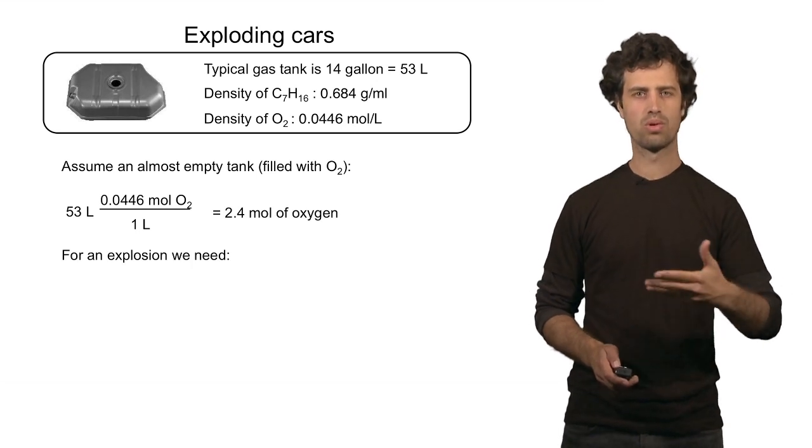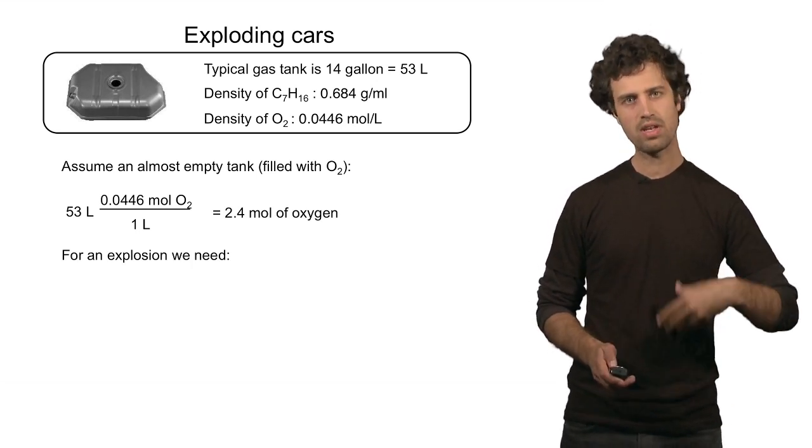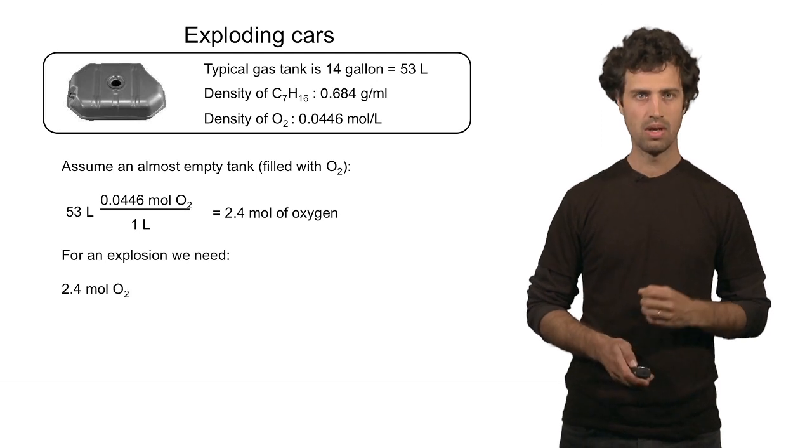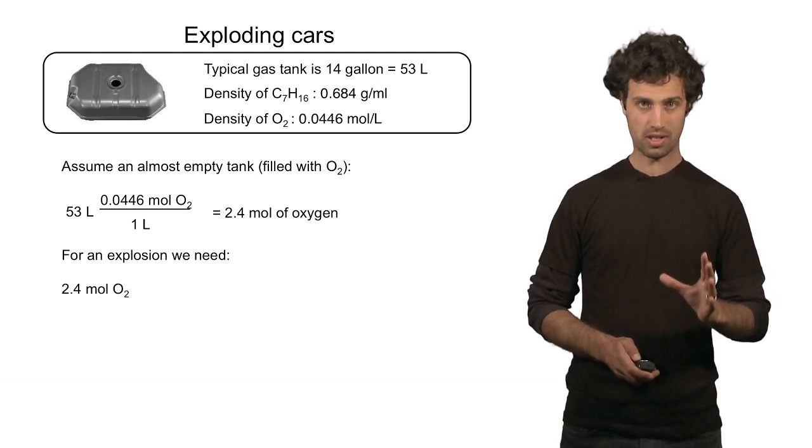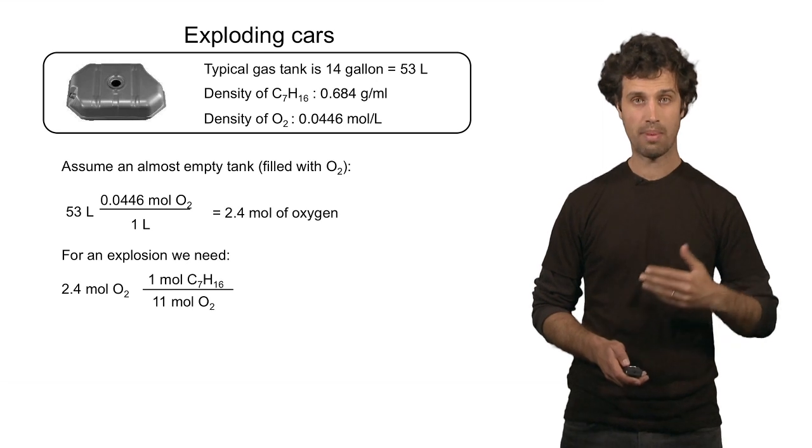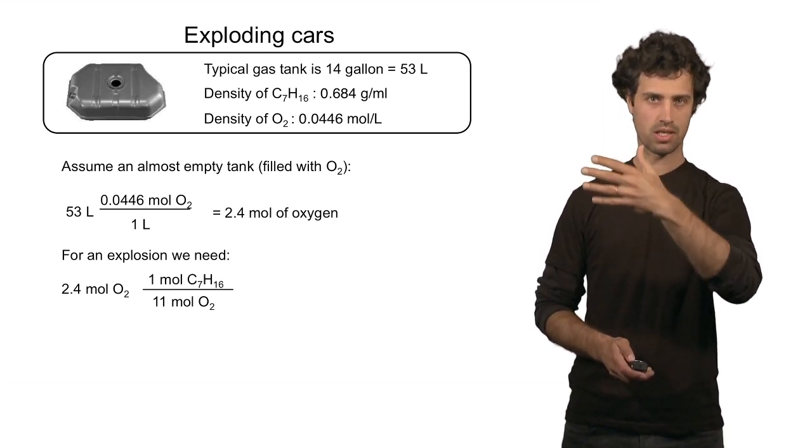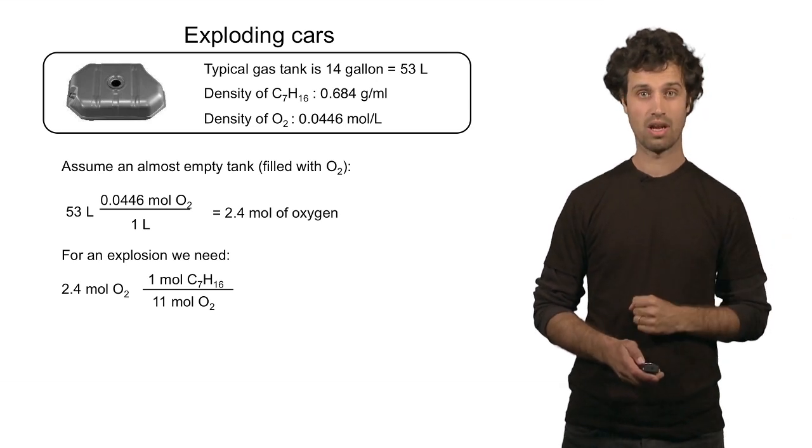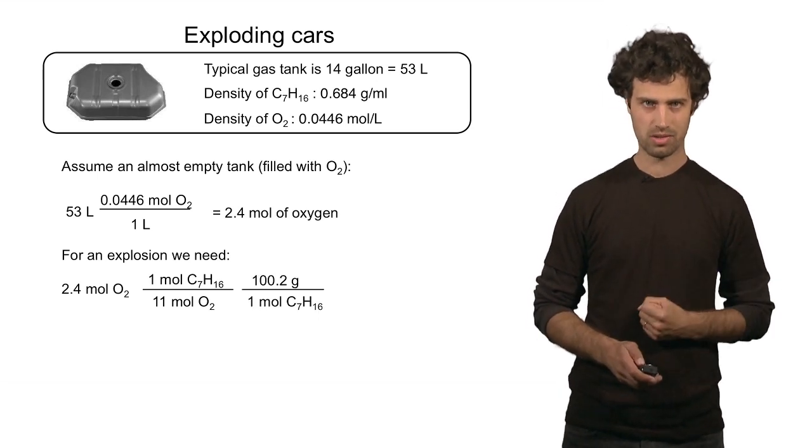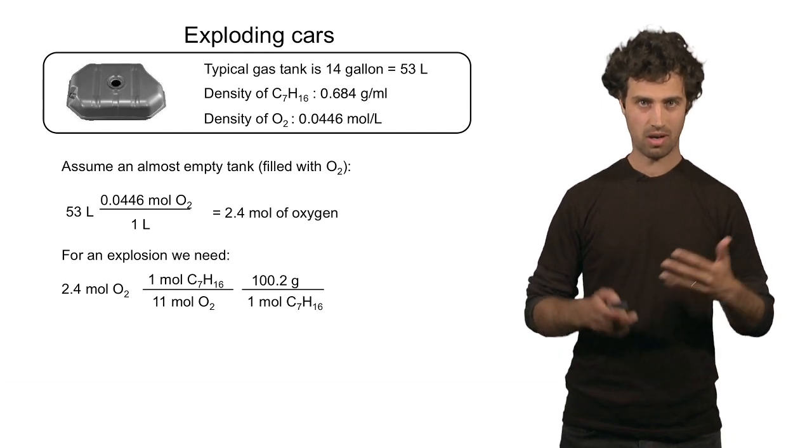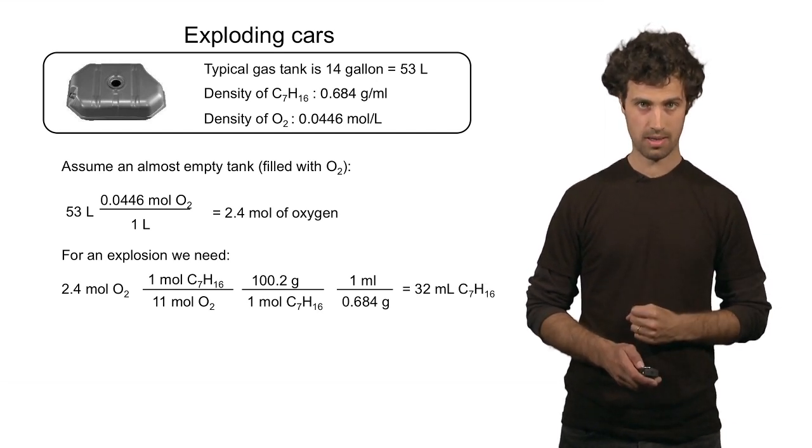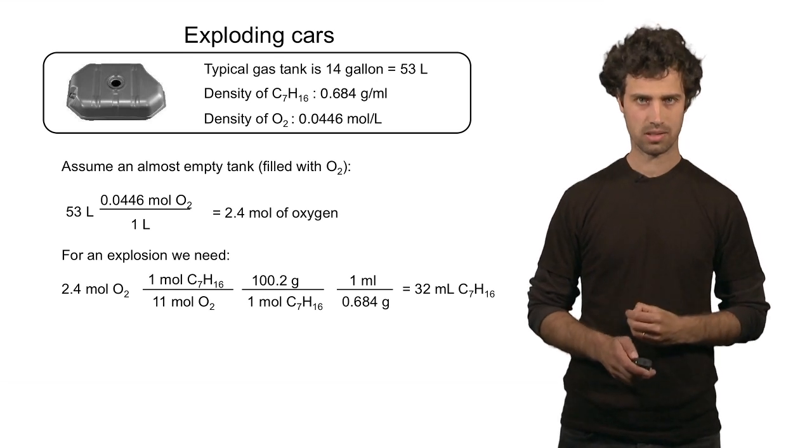How many moles of heptane do I need? And given the amount of heptane that I need to create conditions for an explosion, what is the volume of heptane that I need? So let's take this 2.4 of oxygen and convert it into the number of moles that I need for heptane. What I do is I multiply it by the mole ratio. I put oxygen at the bottom and heptane on top of this ratio. So I convert number of moles of oxygen into number of moles of heptane. Then if I multiply that by the molar mass of heptane, I have the total amount of mass of heptane. Then if I divide it by the density, I find the volume of heptane. I arrive at 32 milliliters of heptane.